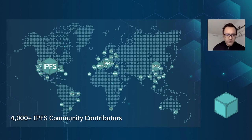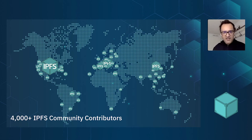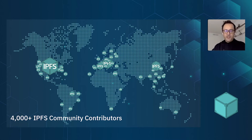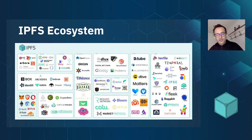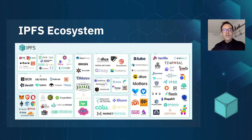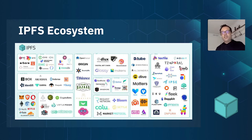The IPFS community is all over the world — people coming from different continents. At this point, over 4,000 people are contributing in the community. Thank you for your contributions — it's amazing. The IPFS ecosystem is comprised of hundreds of apps and many different services. Some people are using it for content, some for infrastructure, some for ops, and some for personal data sharing, keeping data alive, and storing data.